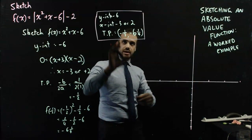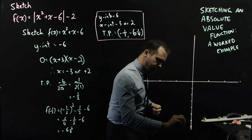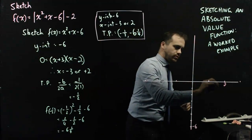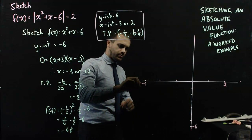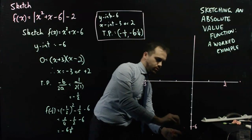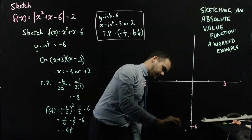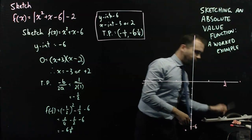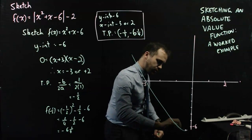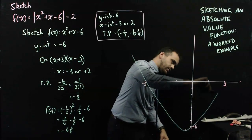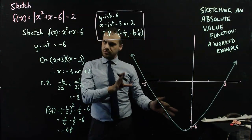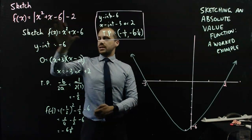Now I'm going to sketch it on my Cartesian plane. Y-intercept of negative 6 — here's negative 6. X-intercepts of 2 and negative 3, and a turning point of negative one half, down there, at negative 6 and a quarter, which is about there. Obviously this is rough, but we can sketch a quadratic that has a turning point there and passes through 2.